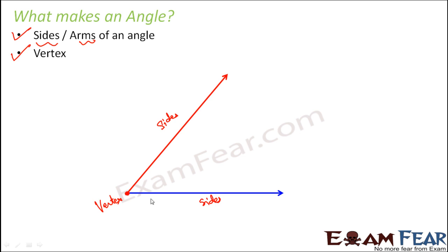So in this case, let us suppose that if this point is A and let us call this as B, let us call this as C. So we can say that AB and AC are the sides of the angle and vertex is point A.